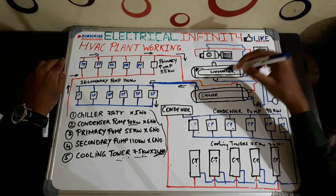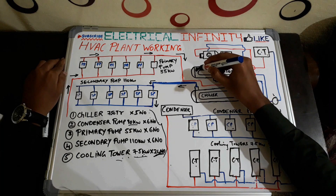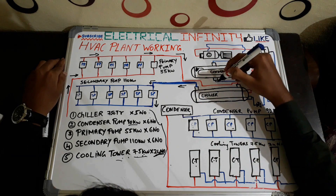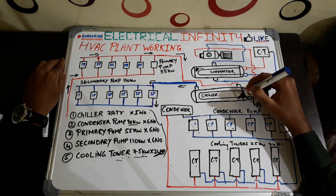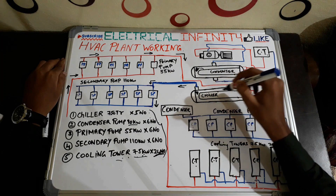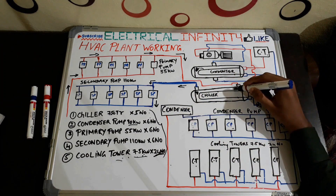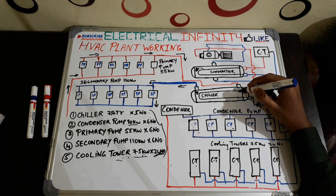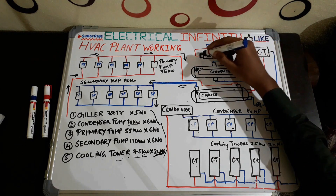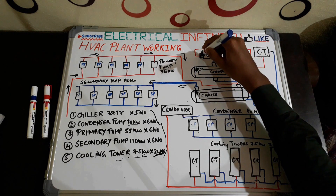Coming to the chiller — the refrigerant is present in the tube type of the chiller, whereas in the condenser it was in the shell type. The refrigerant is transferred from the condenser via an expansion valve into the tube type of the chiller. The water used for cooling the entire building is present in the shell type of the chiller. The water in the shell side gets cooled due to heat transfer with the refrigerant in the tube side. After heat transfer, the warmed refrigerant is sent back to the compressor.